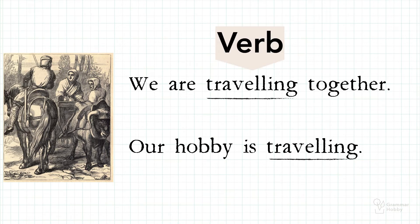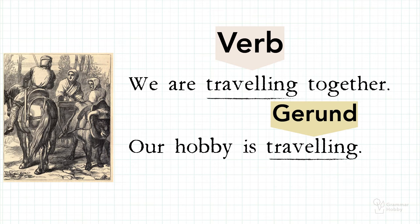Action verbs show that someone is doing an action. A gerund, although it looks exactly like a verb, never tells about the action of someone. Instead, it names a certain concept in the form of a verb.